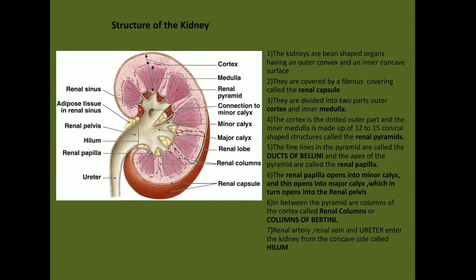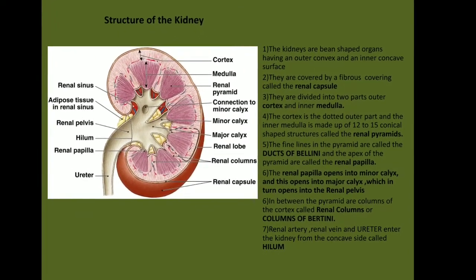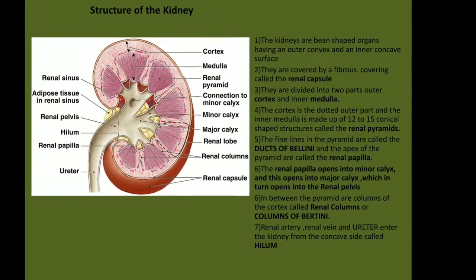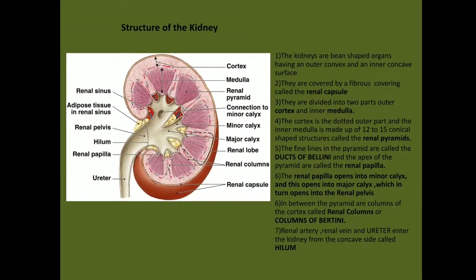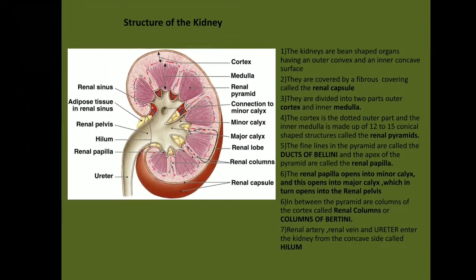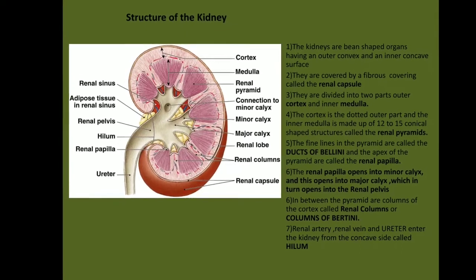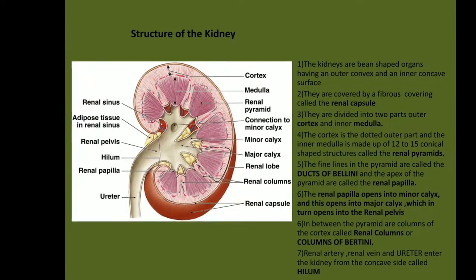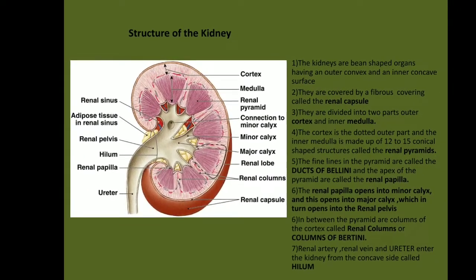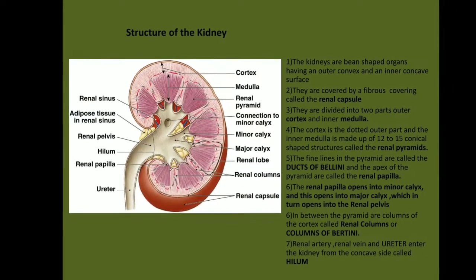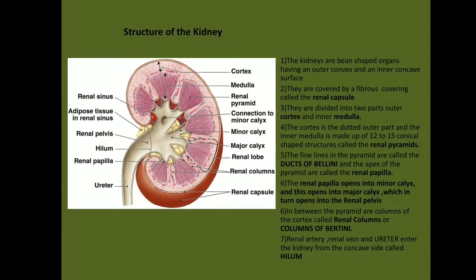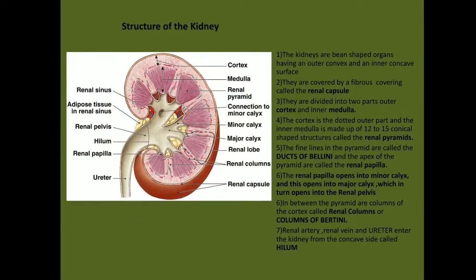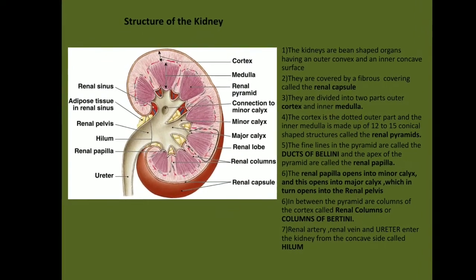The kidneys are bean-shaped organs having an outer convex surface and an inner concave one. They are covered by a fibrous covering called the renal capsule. They are further divided into two parts: the outer cortex and inner medulla. The cortex is the dotted outer part and the inner medulla is made up of 12 to 15 conical-shaped structures called the renal pyramids.